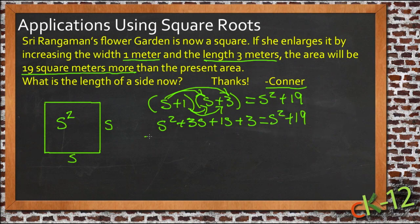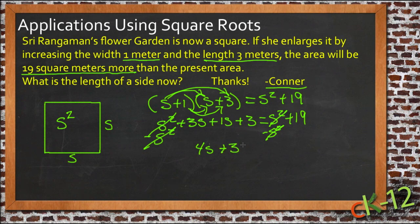So now we'll combine like terms. We can subtract S squared from both sides and that's going to go away, and it's going to go away over here. And then we have 3S plus 1S, that's 4S, and we'll just leave the other two and we'll do the next step here: plus 3 equals 19.